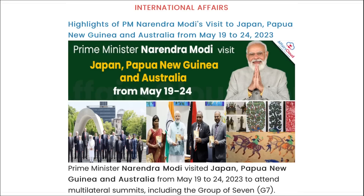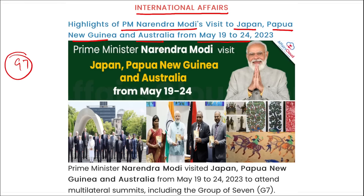Next, talking about international affairs: Prime Minister Narendra Modi visited Japan, Papua New Guinea, and Australia from 19th to 24th of May 2023. This was to attend multilateral summits, including the G7 — the Group of Seven. India was invited as a guest country for the G7 summit. Remember: which country was invited as the guest country during G7? It was India.